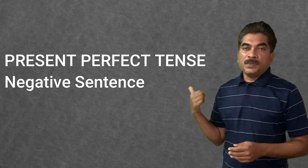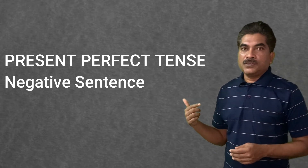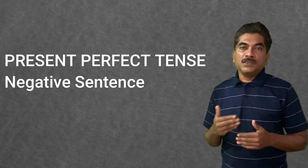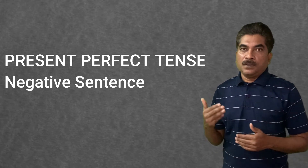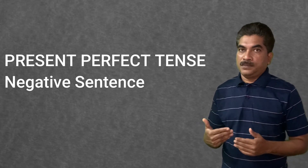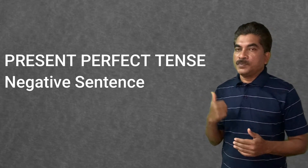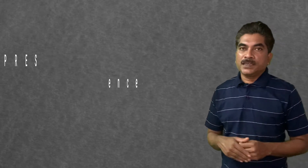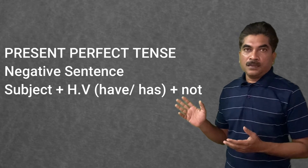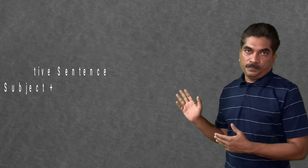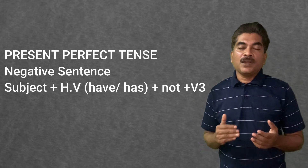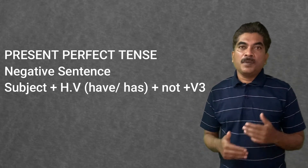In the present perfect negative sentence, 'not' is used after the helping verb. The helping verb is 'have' or 'has' according to the subject. The format is: subject, then helping verb have or has, then 'not', and then the verb in third form — that is, past participle.